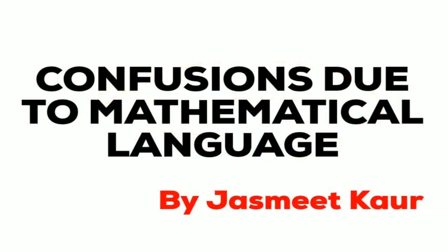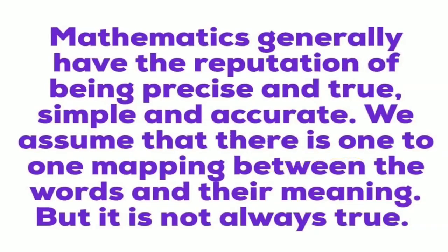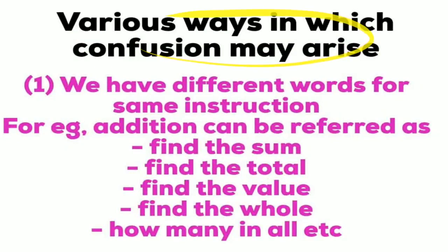Confusions due to mathematical language: mathematics generally has the reputation of being precise, true, simple, and accurate. We assume there is a one-to-one mapping between words and their meanings, but it is not always true. One source of confusion is that we have different words for the same instruction - for addition we can say 'find the sum,' 'find the total,' 'find the value,' 'find the whole,' or 'how many in all' - there are many ways to express the same concept.